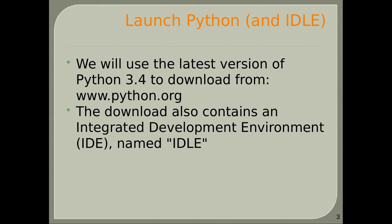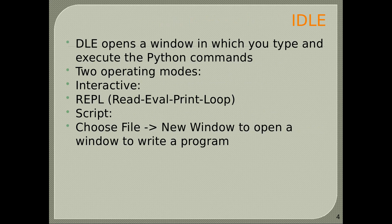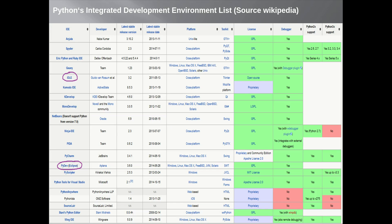How to launch Python and IDLE. IDLE opens a window in which you type and execute Python commands. There are two operating modes: the first is interactive REPL (Read Eval Print Loop), and the second is script mode — choose File, click New Window to open a window where you can write a program. You can check Python's integrated development environment list on Wikipedia.